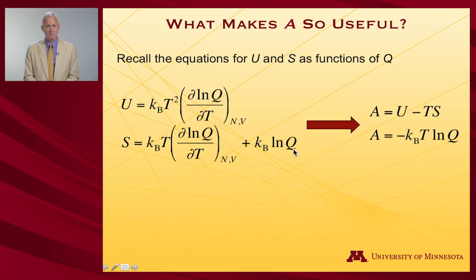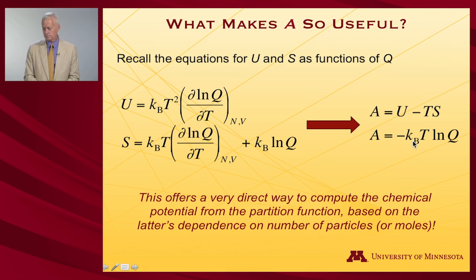Recalling that A, the Helmholtz free energy, is equal to U minus TS. If I do that, if I multiply this times T and subtract it from U, you see this first term is going to cancel this term. I'll get a kT squared partial, that goes away. And I'm left with minus kT log Q. So that is a very direct way to get at the chemical potential from the partition function.